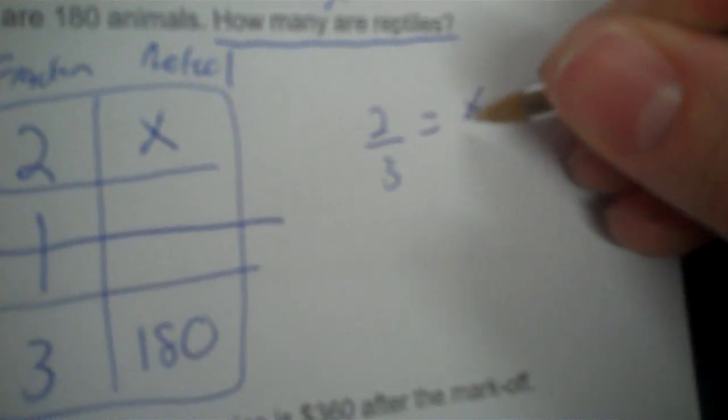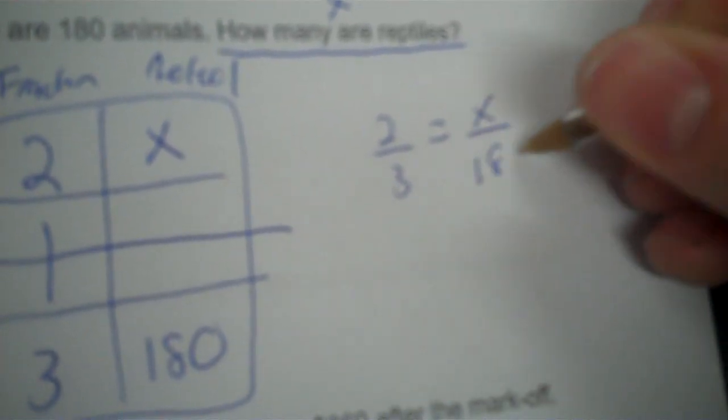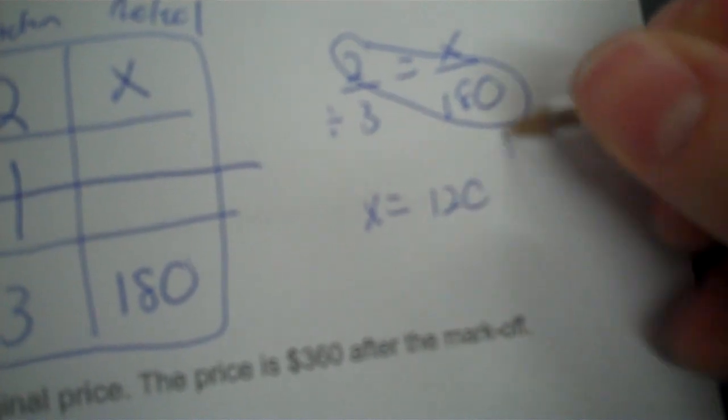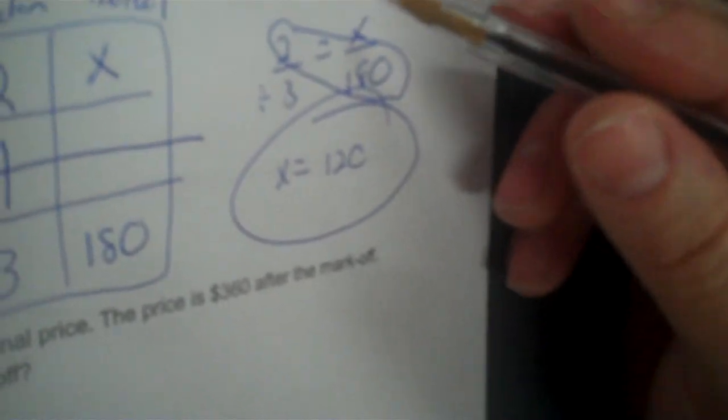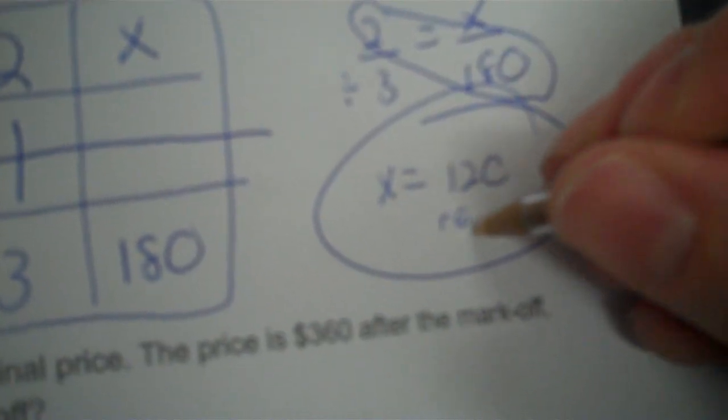We've got to decide where the X goes — it says how many are reptiles, so there's your X. 120 animals total. So it's 2/3 equals X over 120. Cross-multiply and divide by 3, and I get 120 reptiles.